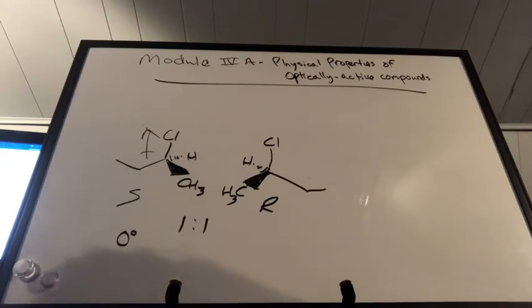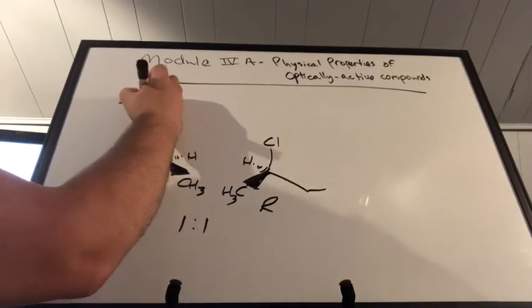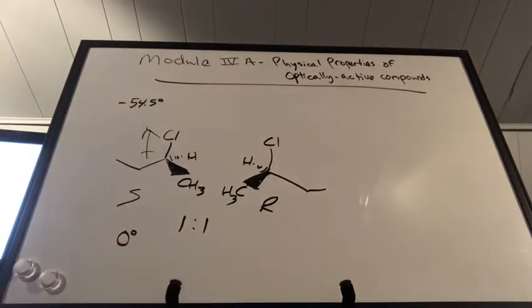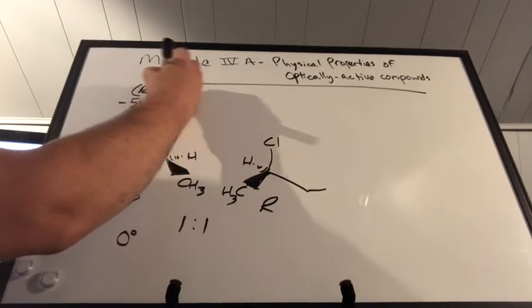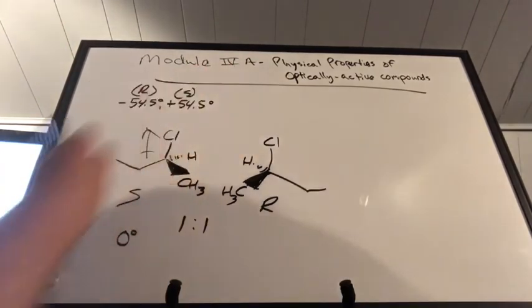I wanted to give you one particular example. Ibuprofen is in one type of configuration. For the R ibuprofen, that's going to be at negative 54.5 degrees. So that's 54.5 degrees to either the right or left, maybe it would be right, from zero degrees. And then its S configuration is going to be exactly positive 54.5 degrees.